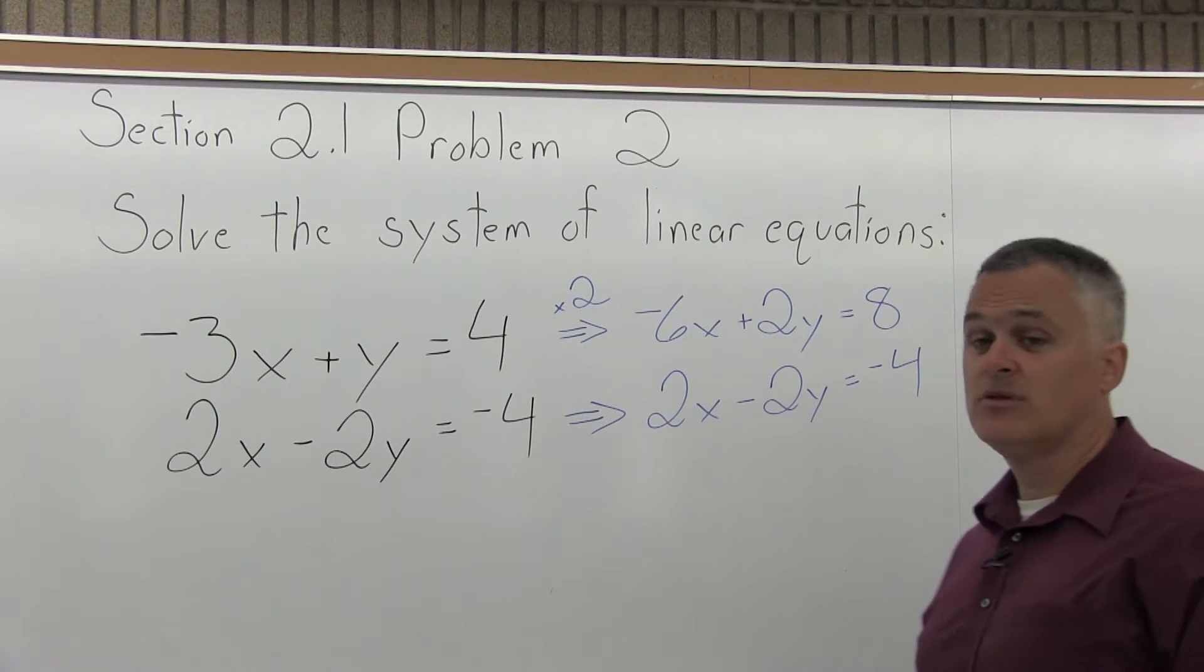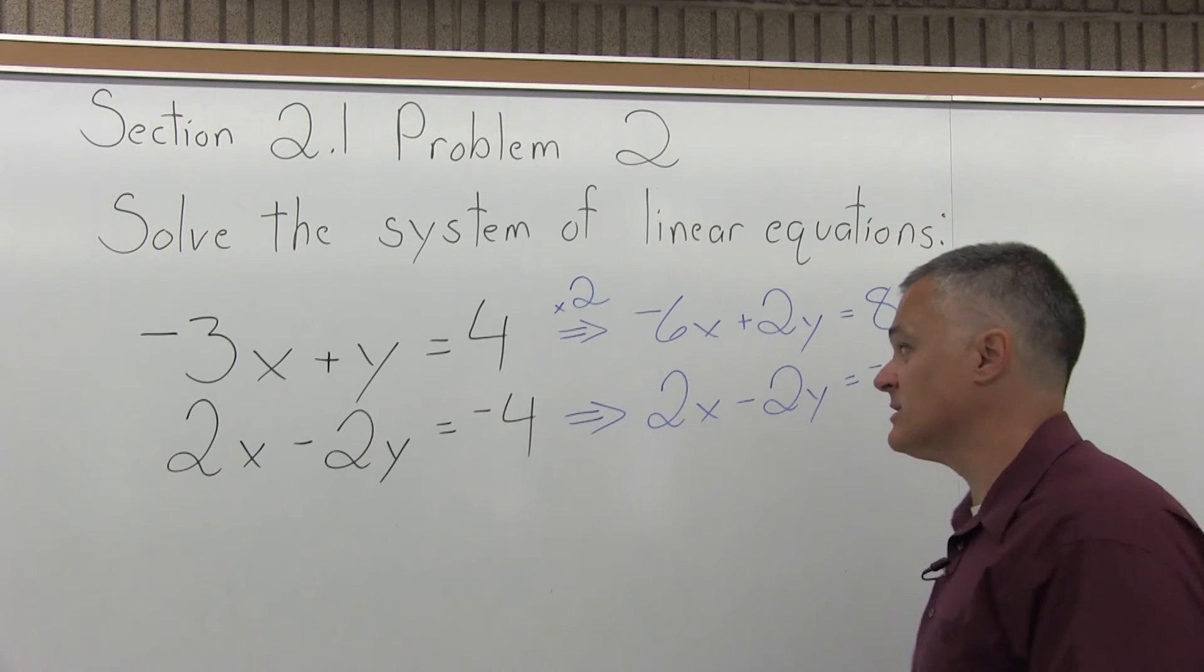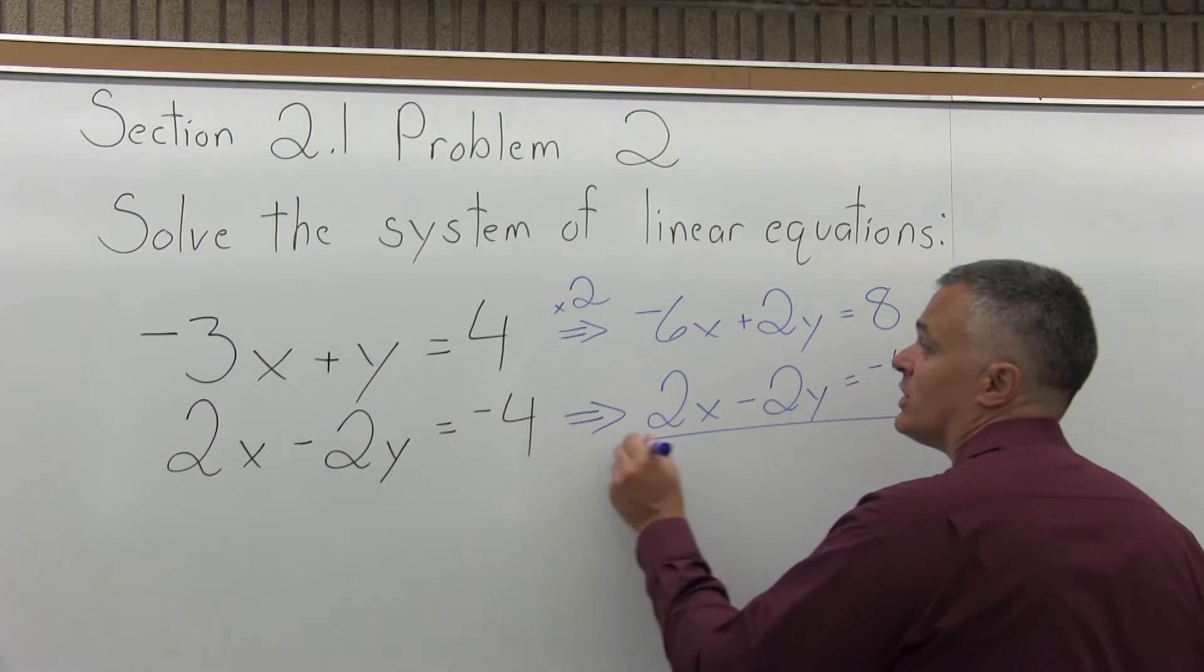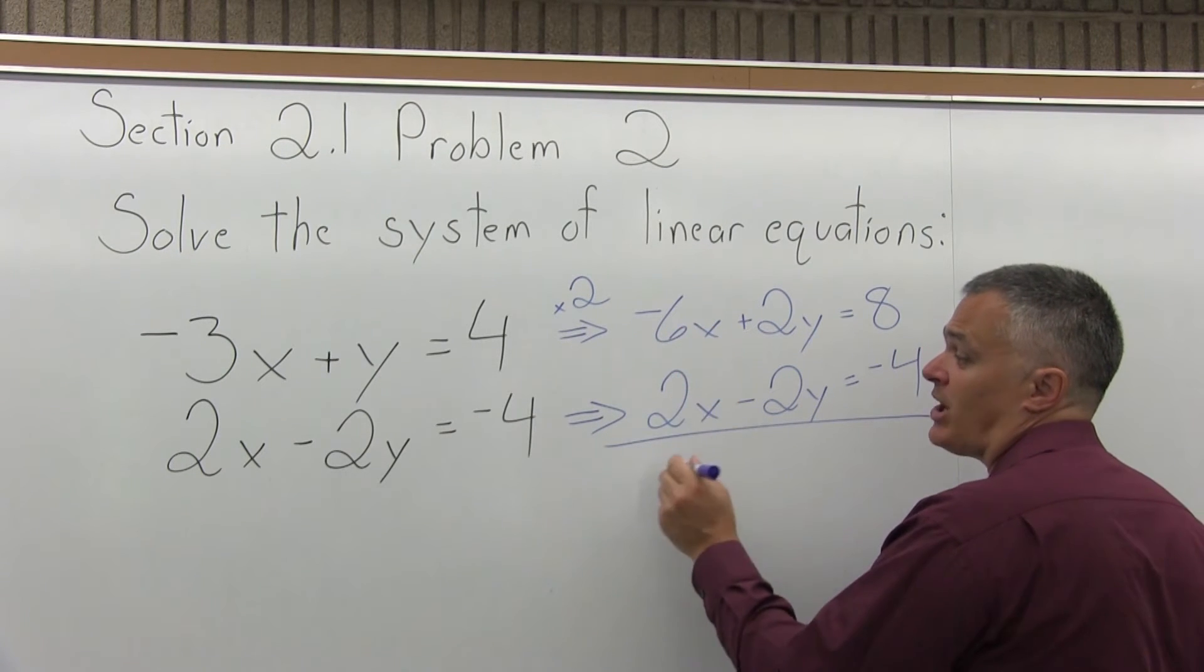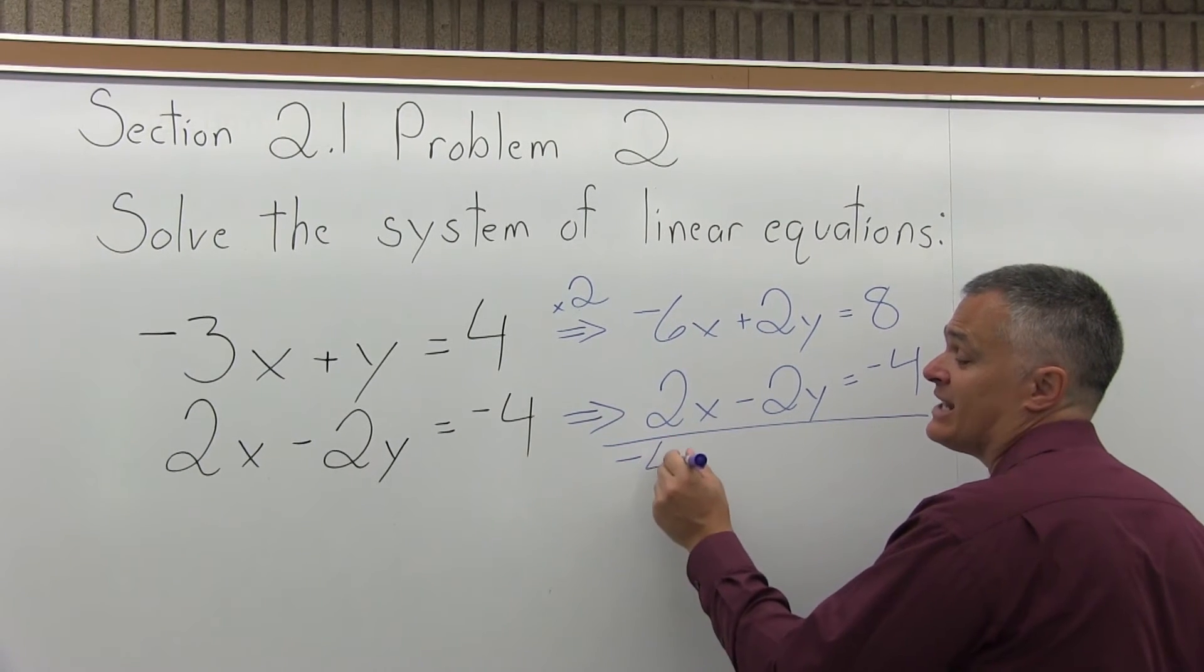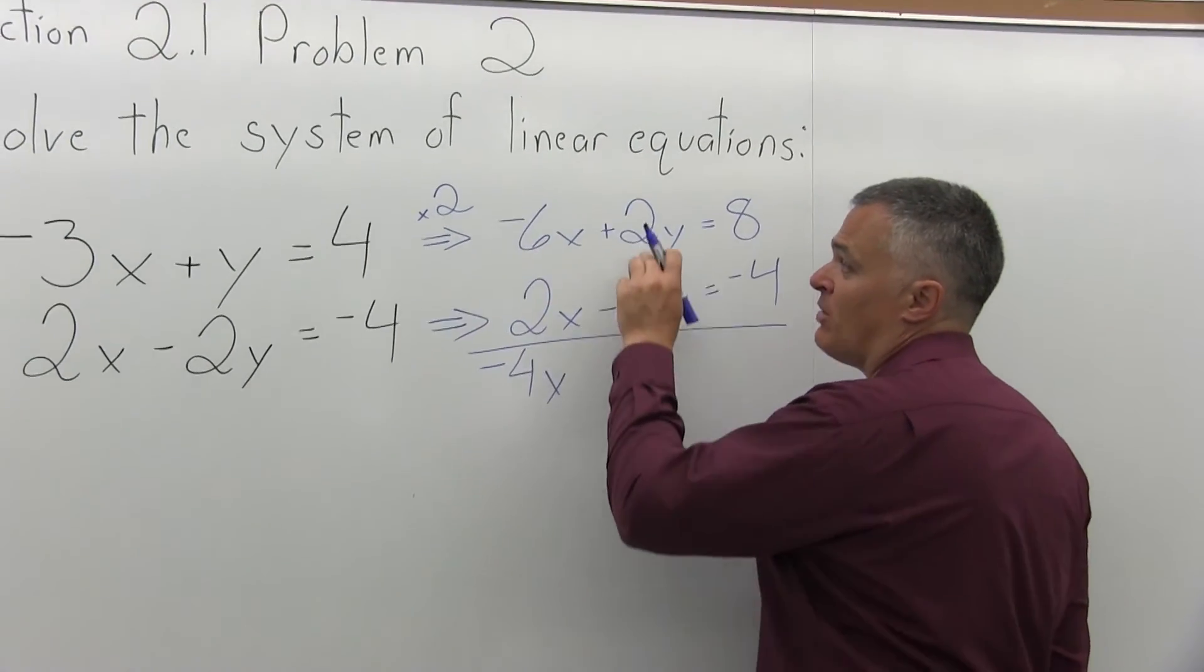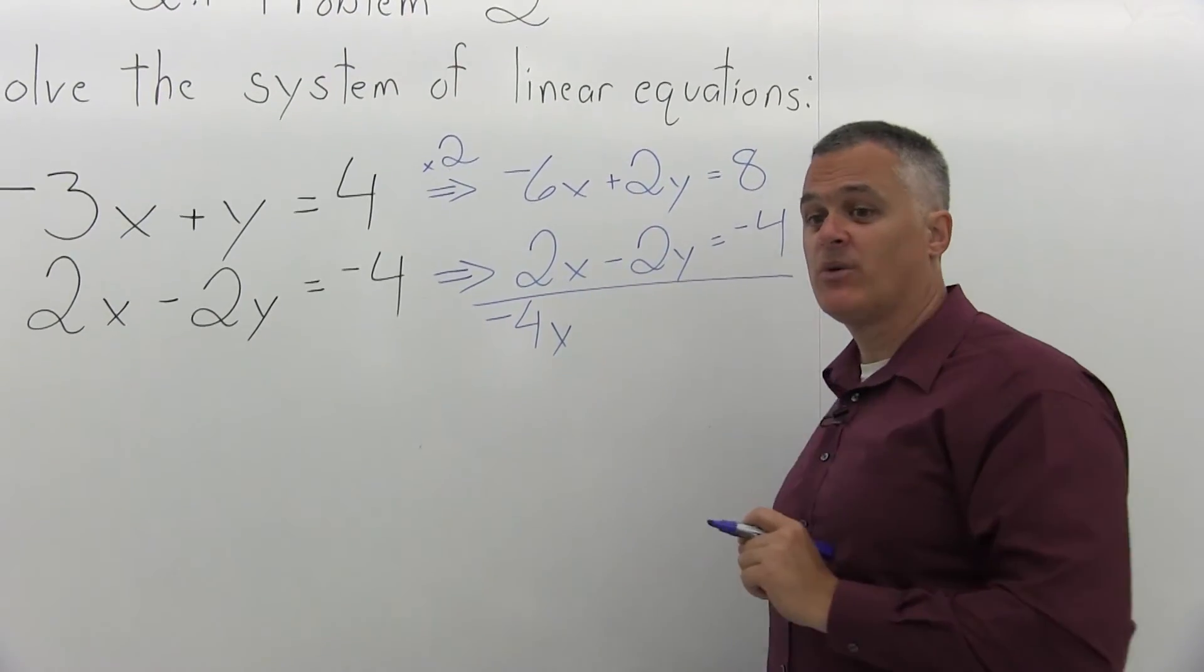So step two is add the equations together to cancel one of the variables. So negative 6x and positive 2x will be negative 4x, pay attention to the sign. Positive 2y and negative 2y will cancel.